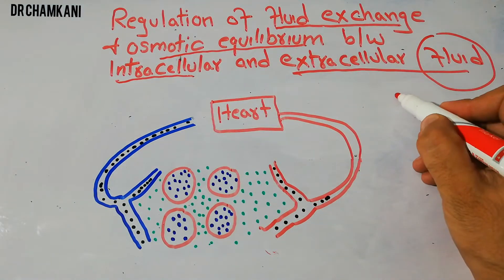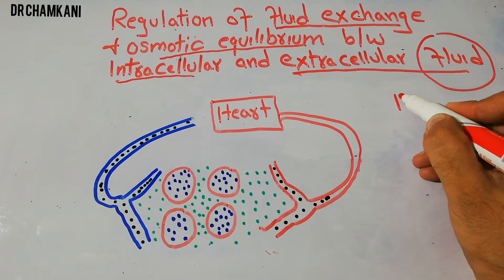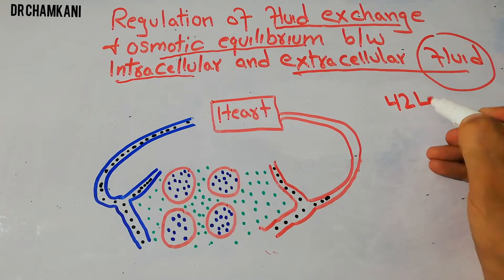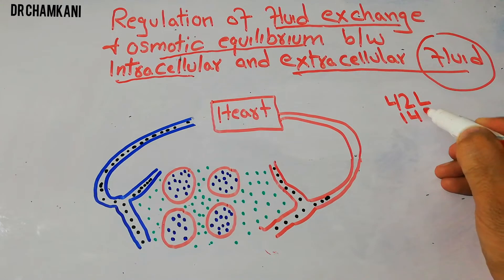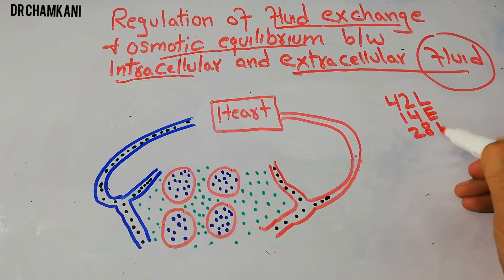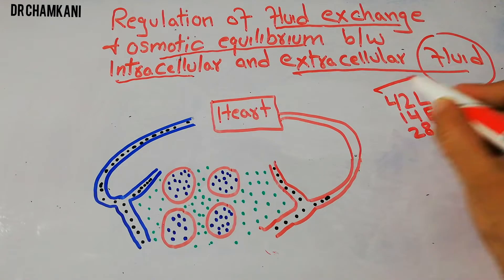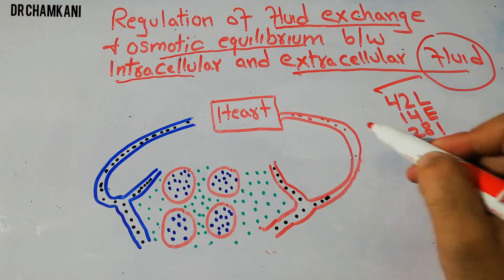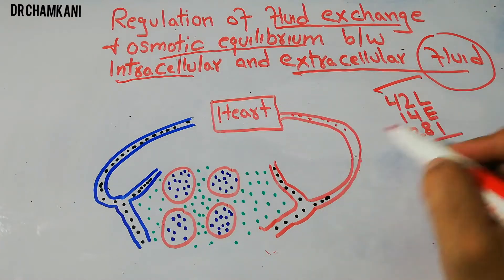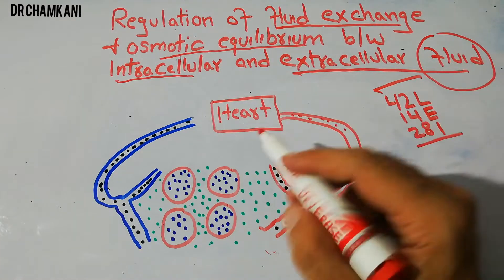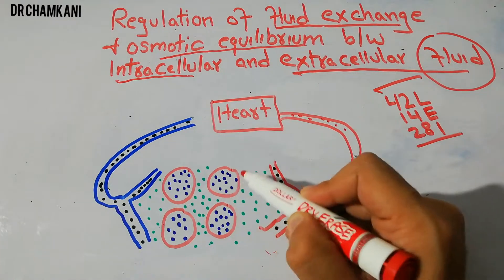In the human body there is around 42 liters of fluid. 14 liters is the extracellular fluid and around 28 liters is intracellular fluid. The extracellular fluid is basically present in the plasma and the interstitial fluid, while the intracellular fluid is present inside the cells.